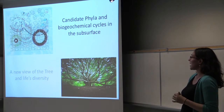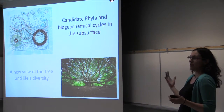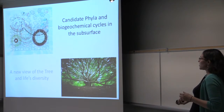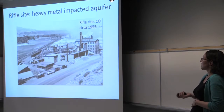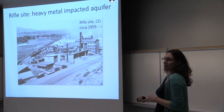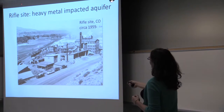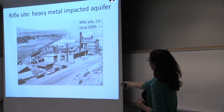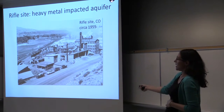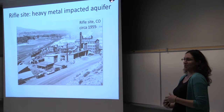The first story looks at Candidate Phyla — lineages on the tree of life for which we don't have a cultivated representative — and biogeochemical cycles in the subsurface. The site I was working at is the Rifle site in Colorado. This picture shows the site in its heyday as a uranium refinery site, with the Colorado River running along the back and tailings ponds that are the direct cause of the heavy metal contamination.